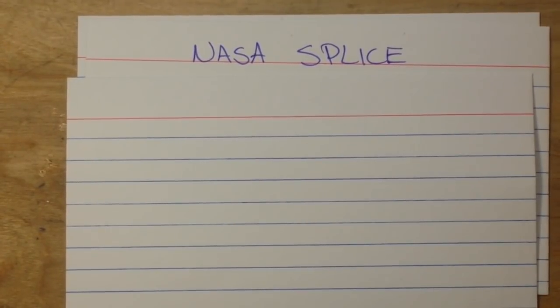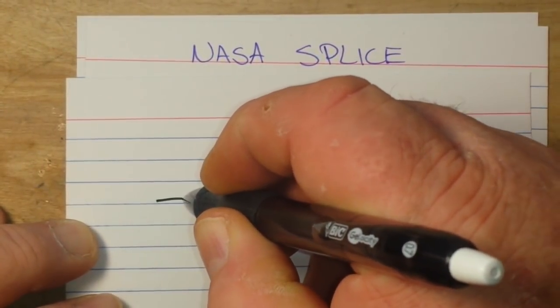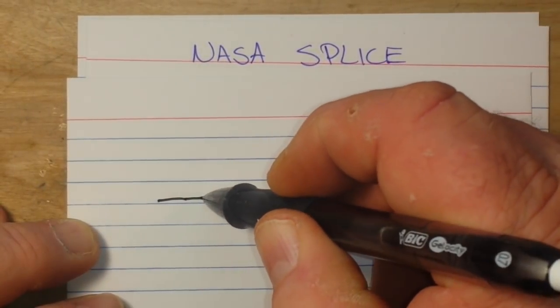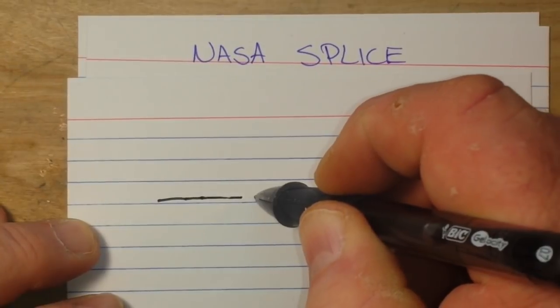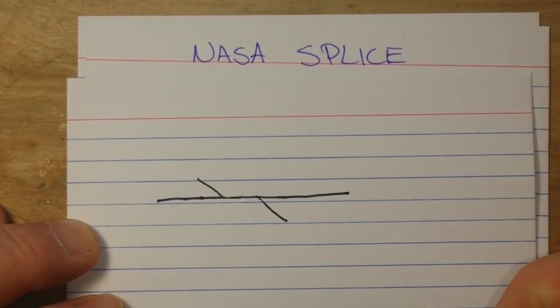We are going to do the NASA splice. It's also called an in-line splice, but we're going to do it to NASA standards. So we have two pieces of wire that we need to join together, and the first thing we're going to do is bring them over so that they kind of cross each other like that.